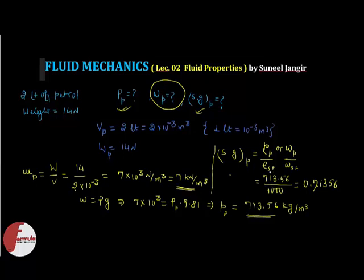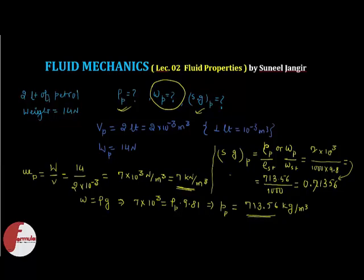Similarly, you can also calculate using specific weight criteria: specific weight of petrol is 7 into 10 to the power 3, and specific weight of water is rho times g — 1000 times 9.81 — which gives the same value. This is how we calculate mass density, weight density or specific weight, and specific gravity for any fluid. Thanks for watching, take care, see you in the next lecture.